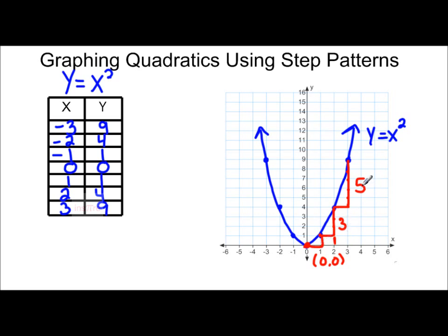This is what we call the step pattern: 1, 3, 5. As you might guess, if we were to continue on, we would go over 1, up 7, over 1, up 9, etc. So 1, 3, 5 is all we need.